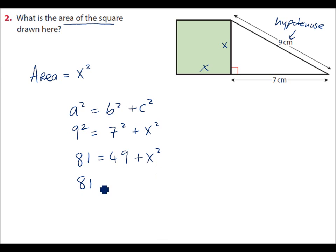81 take away 49 is equal to x squared. This is equal to 32. Now, we don't want x. We want x squared in this, because we want the area. And so it's area in centimeters squared. And there's our answer.